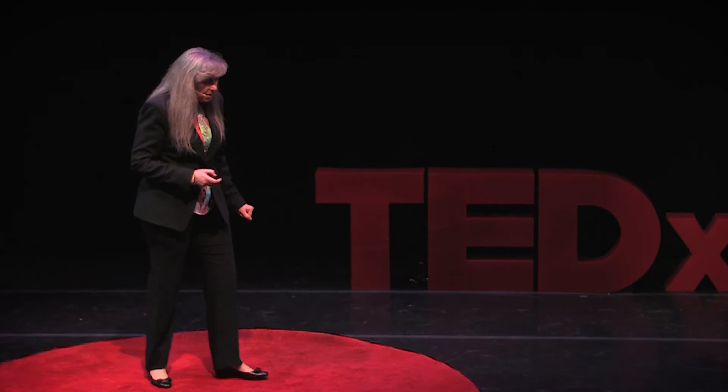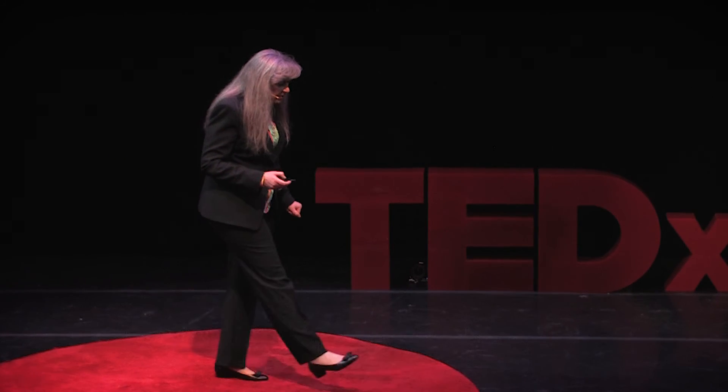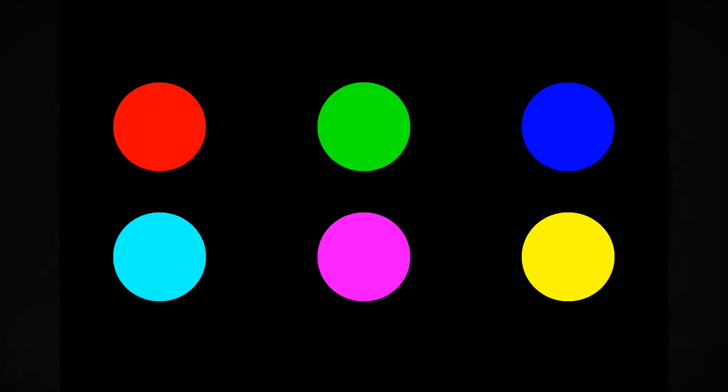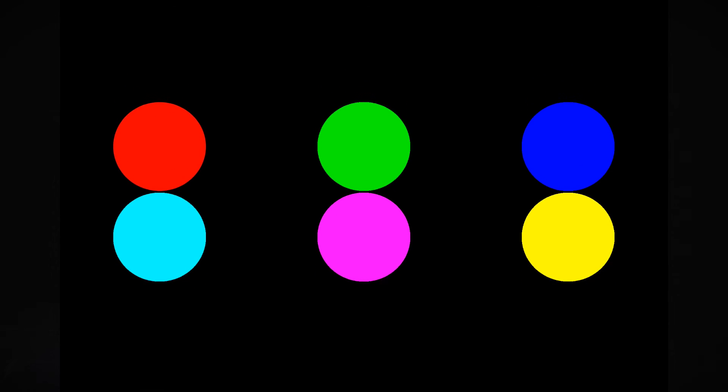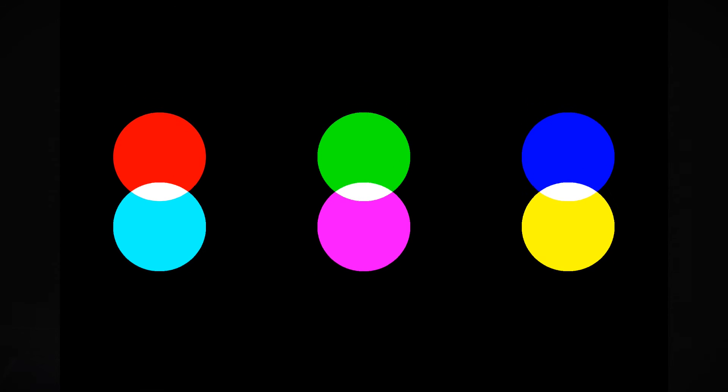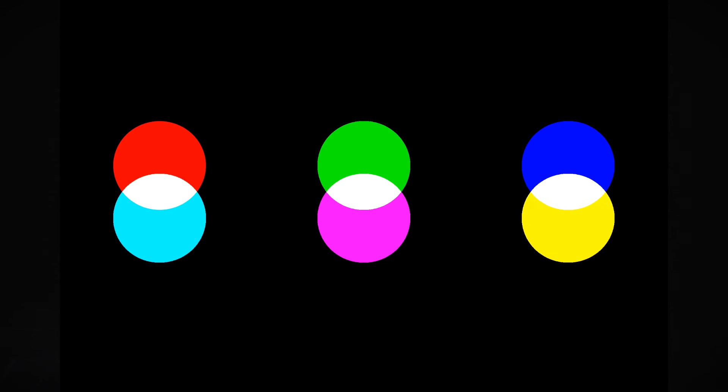Let's do an experiment with lights in the order red, green, and blue, and CMY at the bottom. I now slowly move them so they overlap. And where they overlap, we see white.